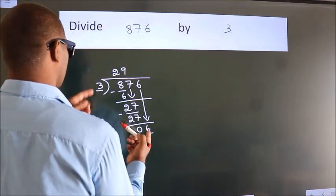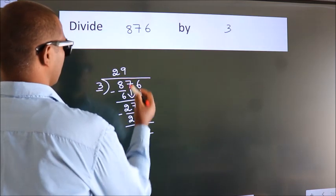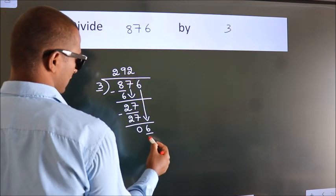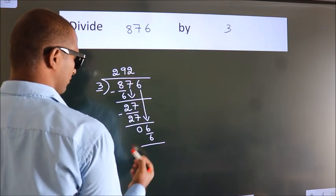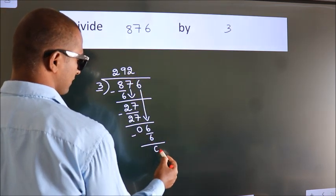When do we get 6 in the 3 table? 3 times 2 is 6. Now we subtract and get zero.